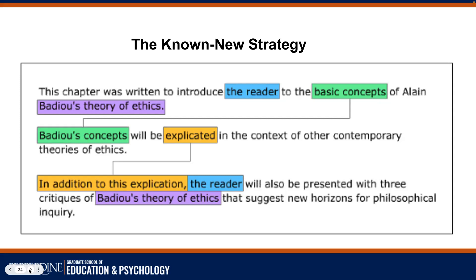An example highlights repeated ideas in color. We begin: 'This chapter was written to introduce the reader to the basic concepts of Alain Bajour's theory of ethics.' The next sentence starts with 'Bajour's concepts,' creating cohesion, then adds new information: 'will be explicated in the context of other contemporary theories of ethics.' Then the next sentence refers back again: 'In addition to this explication, the reader will be presented with three critiques of Bajour's theory.' That weaving back and moving forward is a wonderful writing strategy.